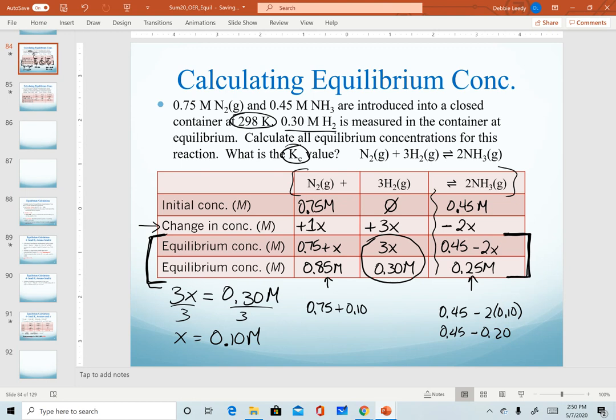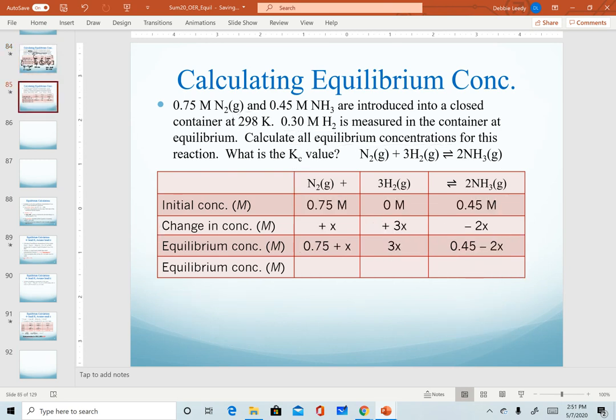Now I have a completed ice table. I have just calculated all equilibrium concentrations. Now I have enough information to solve for my Kc value. Going to a cleaner screen where we know these quantities. We just figured out that nitrogen was 0.85 molar. We knew hydrogen was 0.30 and ammonia was calculated as 0.25.